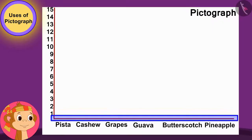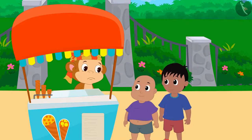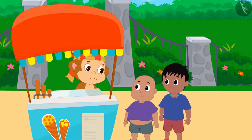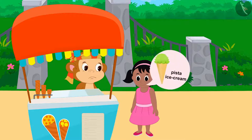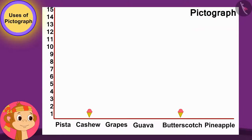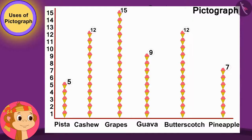The next day, Babban made a pictograph. On the lower line, he wrote the names of different types of ice creams. Then he asked every customer visiting his stall the name of the ice cream they liked. He showed the choices of each customer by making a symbol of an ice cream cone. For example, Pinky loves Pista ice cream the most, so Babban drew an ice cream cone above Pista ice cream's name. The day was over and Babban's pictograph was also complete.